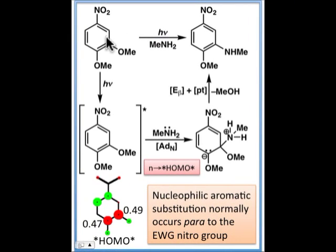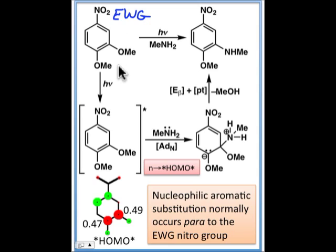Recall that for nucleophilic aromatic substitution, the ring is activated by electron-withdrawing groups because these electron-withdrawing groups make the ring a better electrophile. For the substrate shown here, we can see that there are two possible sites that substitution could take place — either of these two methoxy groups could be displaced by the incoming nucleophile.